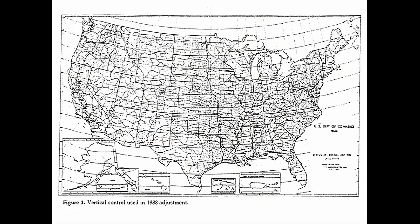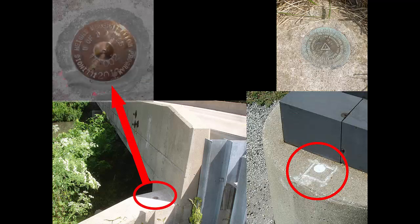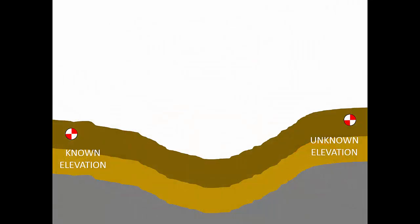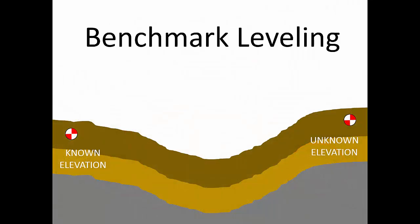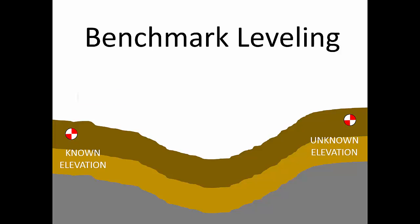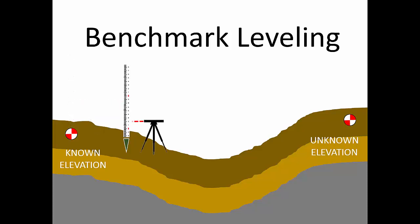By measuring vast networks of level circuits across the continent, surveyors have established heights above sea level at stable, permanent benchmarks. Benchmarks come in many forms and are attached to everyday objects like bridges and fire hydrants. Let's walk through a typical level circuit we call benchmark leveling — you may also hear this called differential leveling or control leveling. Here, our survey site is one-half mile from the nearest benchmark across a shallow valley, and we need to determine the elevation of a newly constructed benchmark on the site.